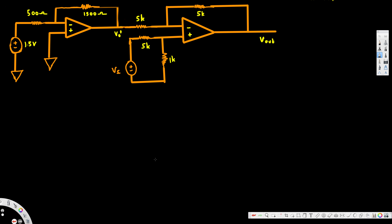In this video we are going to see an example of cascaded op-amplifiers. We are going to see how to calculate the Vout voltage. The first thing is to recognize the first pattern — this is an inverting op-amplifier, this part from here to here.